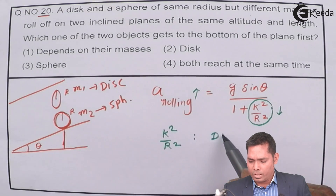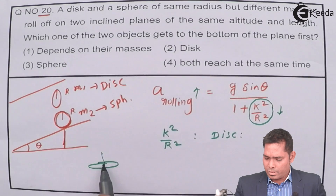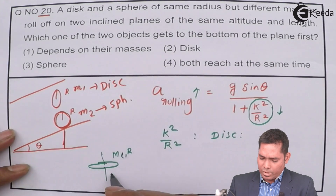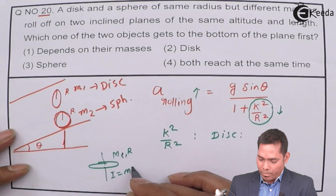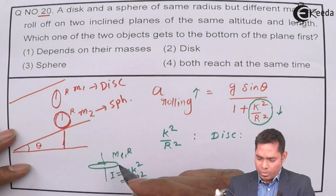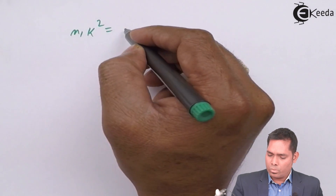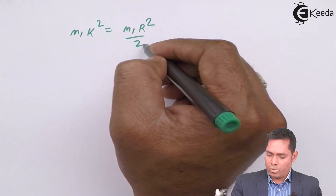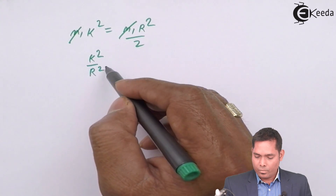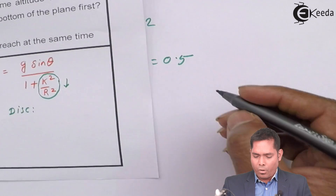For a disk of mass M1 and radius r, the moment of inertia is I = M1 k² = M1 r²/2. So M1 cancels out, giving k²/r² = 1/2 = 0.5 for the disk.